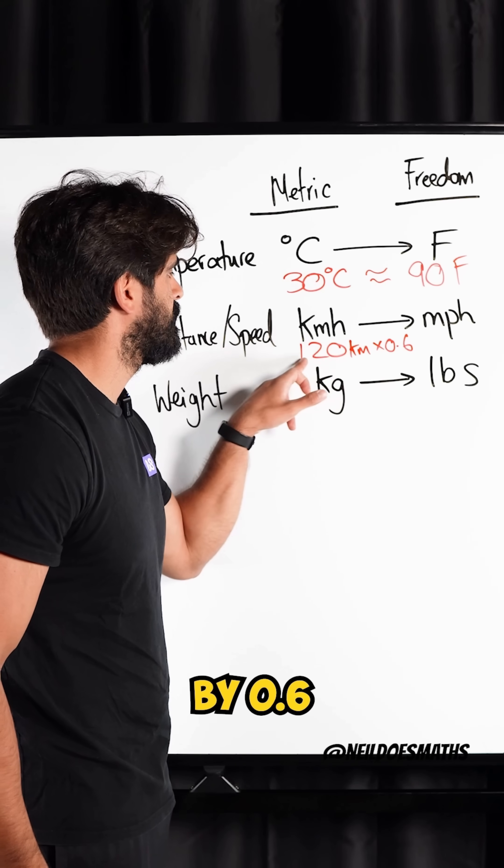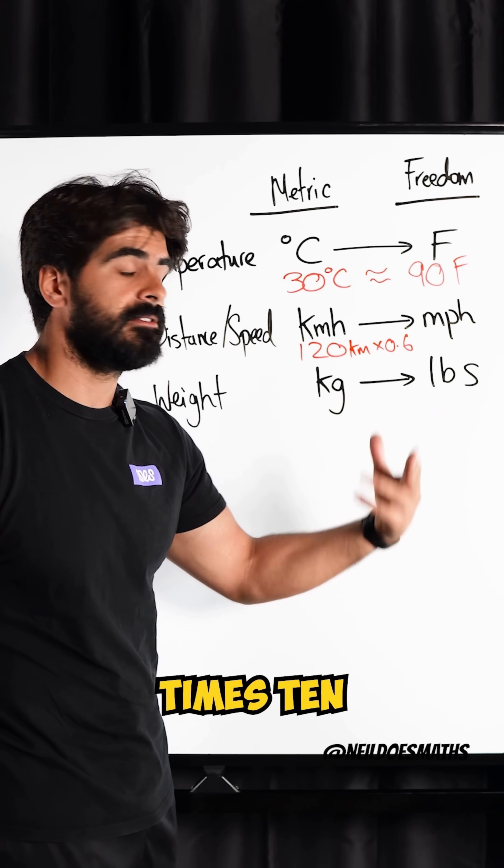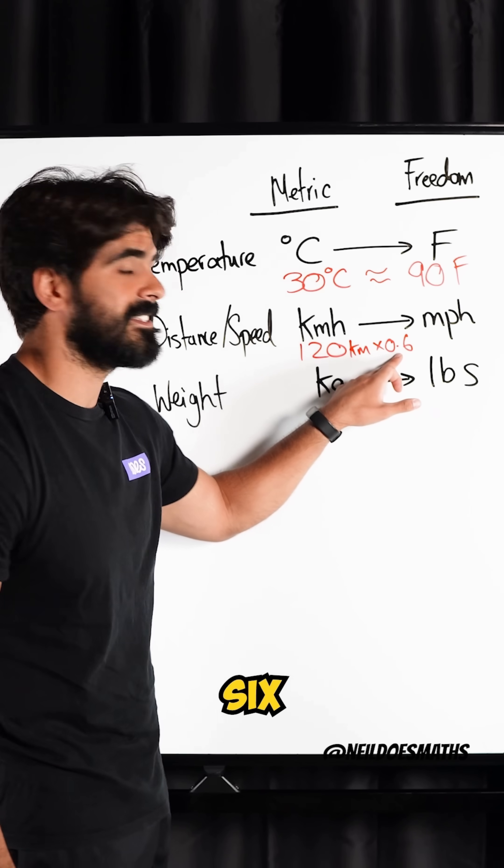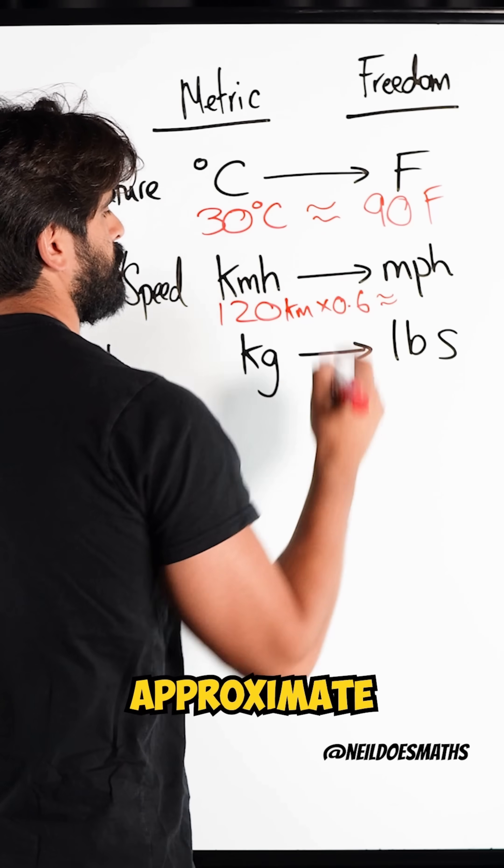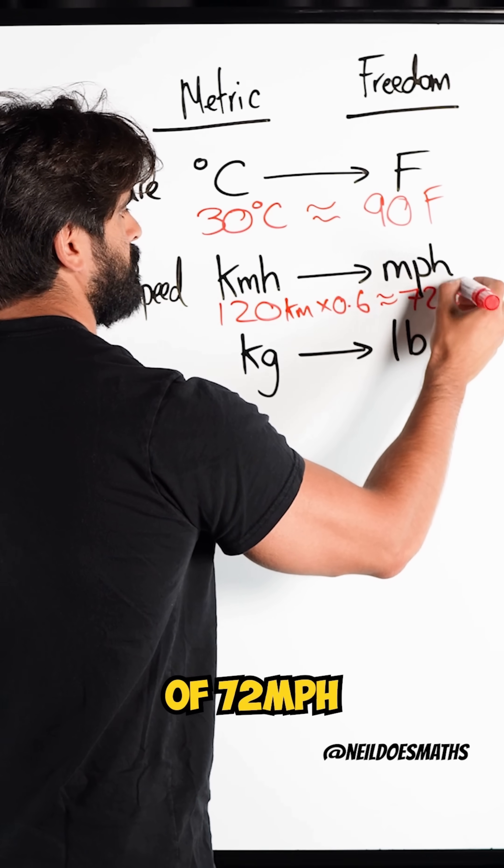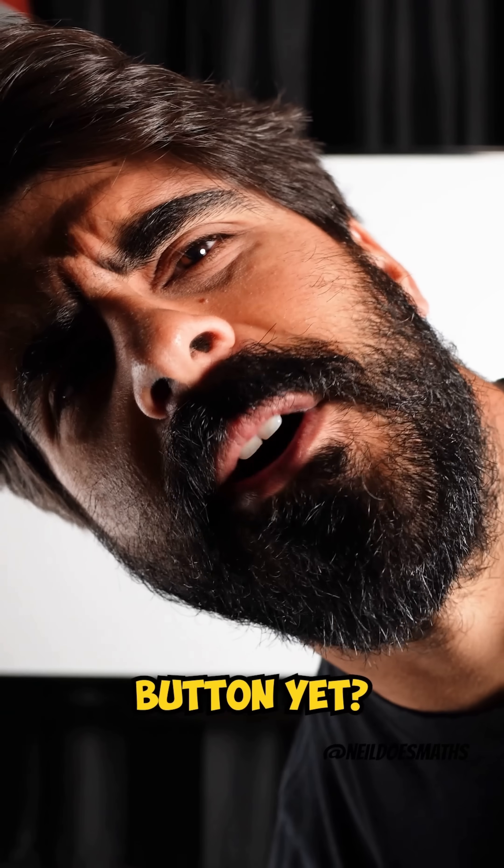Well, multiplying by 0.6, 120 is 12 times 10. So if you multiply this by 10, you get 6. Then 6 times 12 gives you an approximate value of 72 miles per hour. Have you hit the follow button yet?